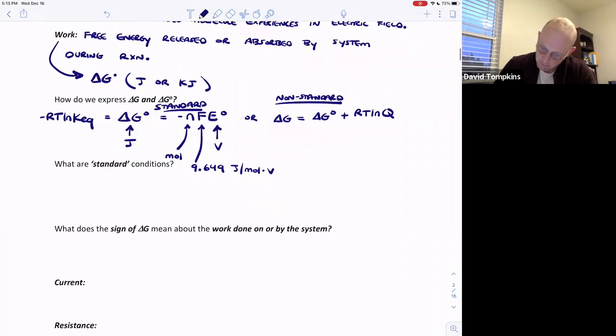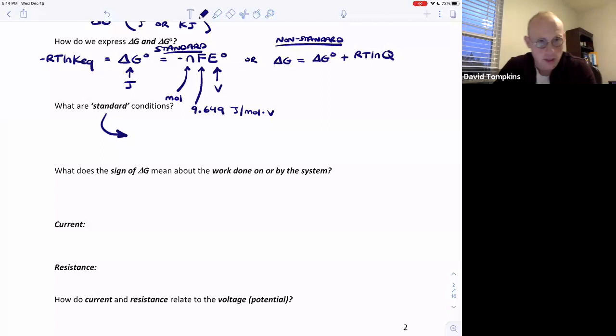It's important to distinguish between standard and non-standard conditions. Standard conditions must meet three requirements where the temperature is room temp or 298 Kelvin, that's 25 degrees Celsius, the pressure is atmospheric one atmosphere pressure, and the concentrations of reactants and products are all one molar.